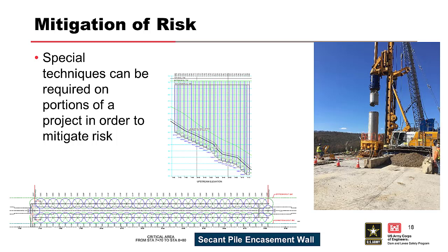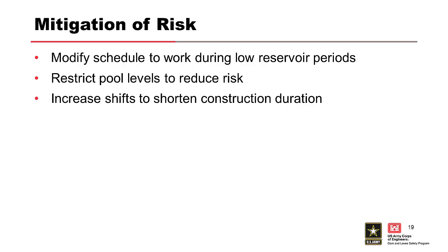This slide shows risk reduction and mitigation measures used during construction of the USACE project at East Branch Dam in Pennsylvania, which consisted of a cutoff wall project. The project included using a cased secant pile method to mitigate the potential for major slurry loss and excavation instability in a critical area where the embankment had been damaged by a previous internal erosion incident. Other methods included requiring that the work be scheduled when the reservoir is historically low, with specifications requiring high-risk activities to occur at low reservoir stages, reservoir restrictions to lower the pool, and requiring shorter construction durations.